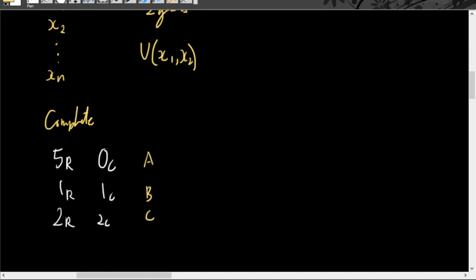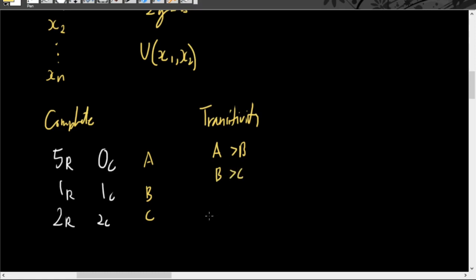The second assumption is transitivity. Transitivity tells us that if the consumer prefers A over B and B over C, then the consumer should prefer bundle A over bundle C — just like the transitivity property of addition.